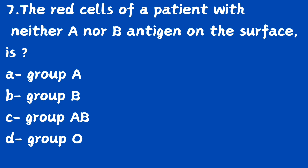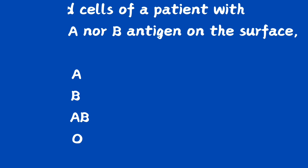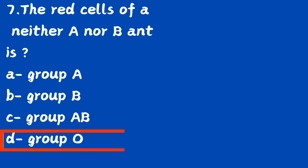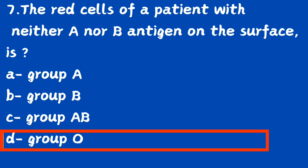Question number 7. The result of a patient with neither A nor B antigen on the surface is: option A, group A; option B, group B; option C, AB group; option D, O group. Question number 8: In which blood group will red cells contain neither A nor B antigen? The right answer is option D, O group. O group will contain neither A nor B antigens.